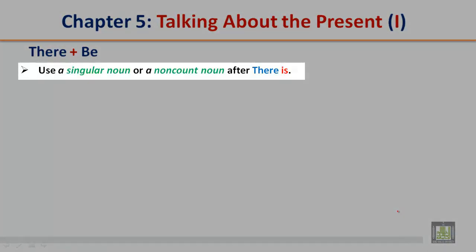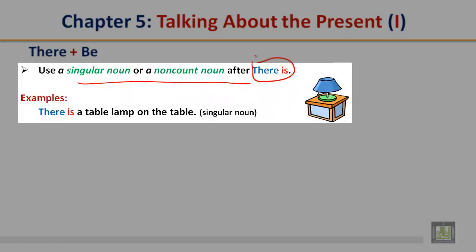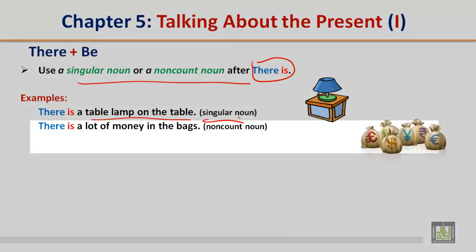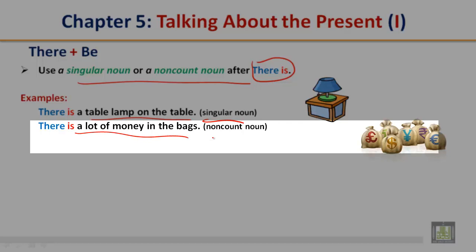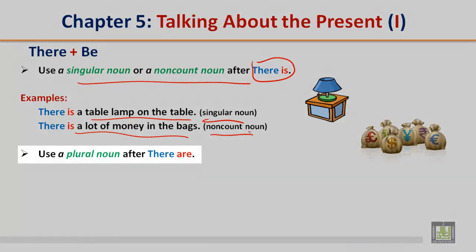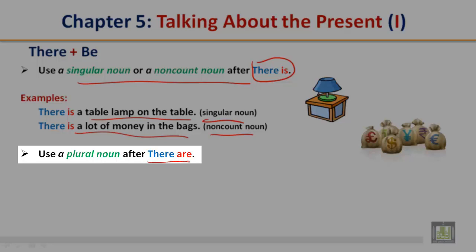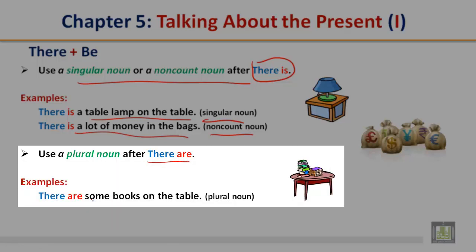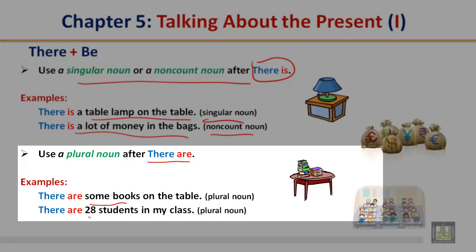There plus be. Use a singular noun or a non-count noun after 'there is.' There is a table lamp on the table — this is a singular noun. There is a lot of money in the bags — this is a non-count noun. Use a plural noun after 'there are.' There are some books on the table — plural noun. There are 28 students in my class — plural noun.